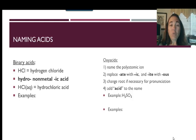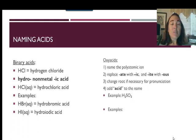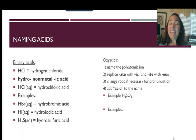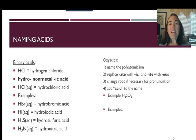Let's look at a few more examples. HBr: put 'hydro' in front, take the root of bromine, add 'ic acid' — so hydrobromic acid. HI: prefix hydro, root word for iodine, then 'ic acid' on the end — hydroiodic acid. H2S: the subscript 2 doesn't change the pattern — hydro in front, root word for sulfur, 'ic acid' on the end. And H3N: hydro in front, root word for nitrogen, 'ic acid' on the end. All binary acids follow this pattern.